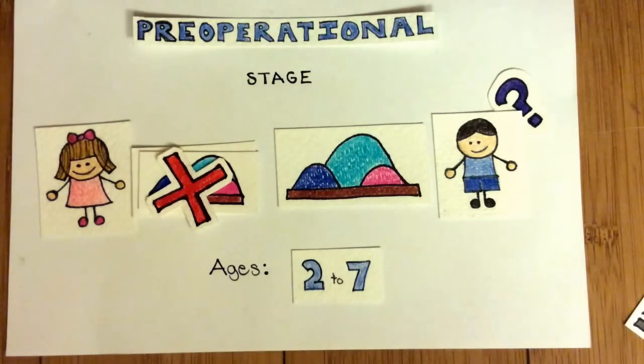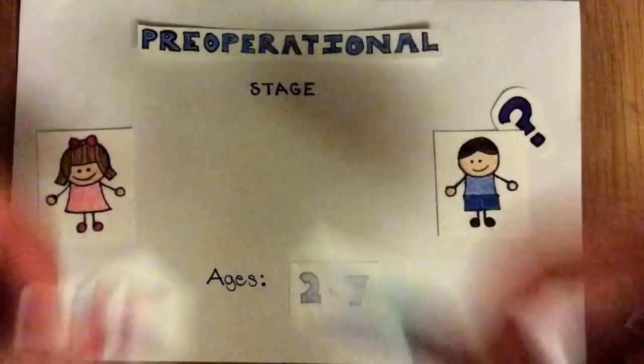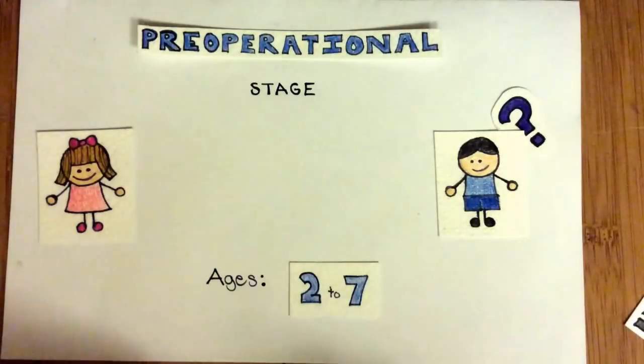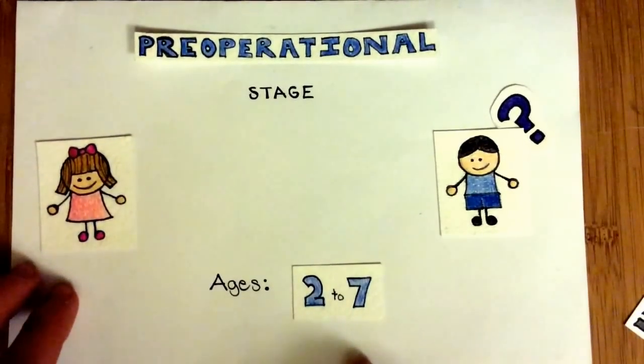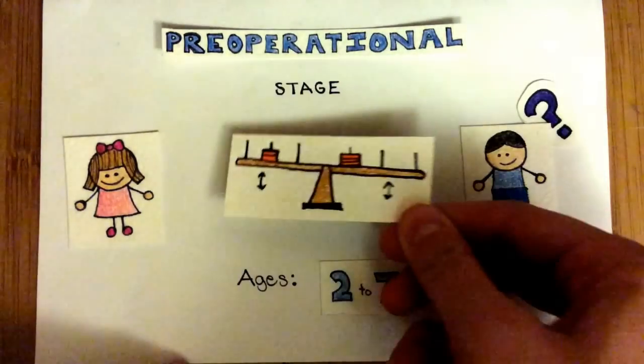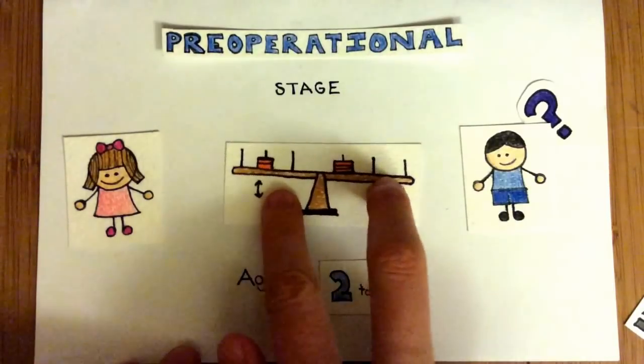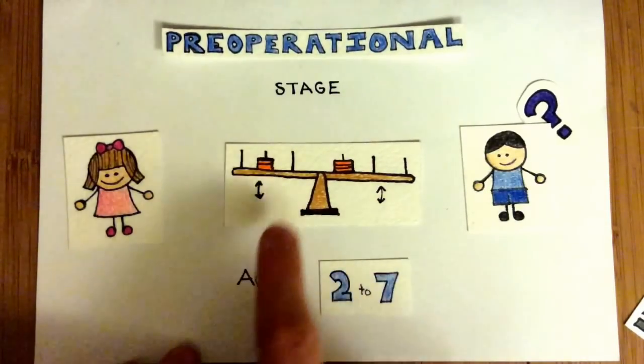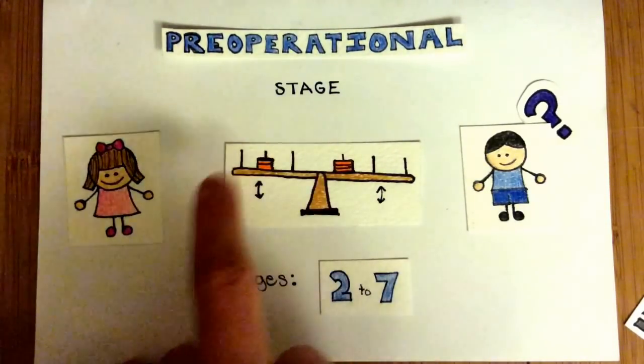Thinking at this stage is also limited by centration, which is defined as the tendency to focus too much on a single feature of an object. For example, if asked which side of the balance will tilt downward, children will often only consider the amount of weight on each side and will neglect the effects of the differing distances.